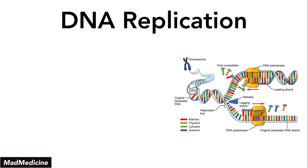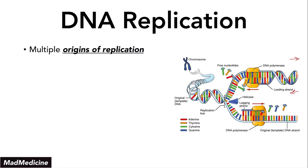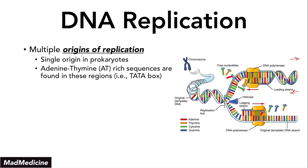In eukaryotic cells, we have multiple origins of replication — this is where replication first begins. In prokaryotic cells like bacteria, you have a single origin of replication. At the origin of replication, for both prokaryotic and eukaryotic cells, you're going to have adenine and thymine-rich sequences. These regions are called TATA boxes, and you can also see these in the promoter regions.